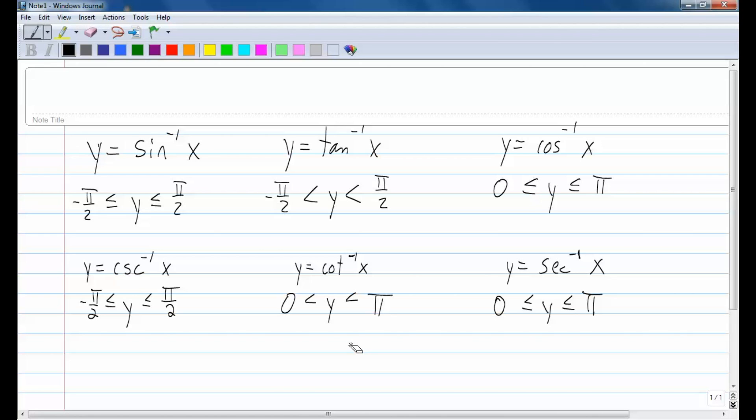So we have three functions that are defined in a very similar place. That's inverse cosine, inverse secant, and inverse cotangent. And we have three other inverse trig functions that are defined in a similar place. That's inverse sine, inverse tangent, and inverse cosecant.